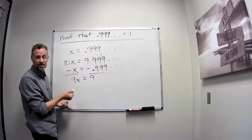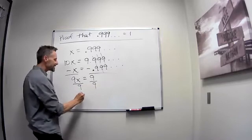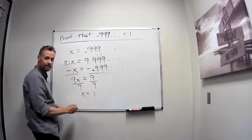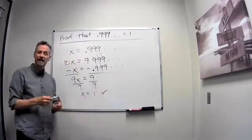Well if 9x equals 9 you can already see what x has to equal. But if I divide both sides by 9 I get x equals 9 divided by 9 or 1. Check. And that's my proof.